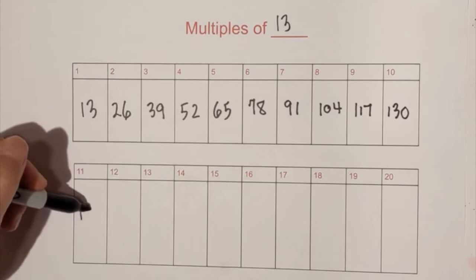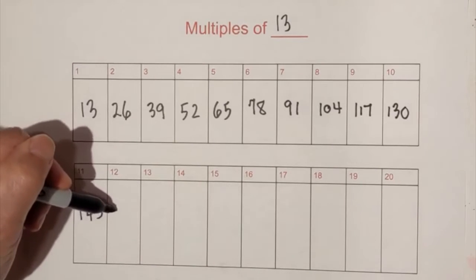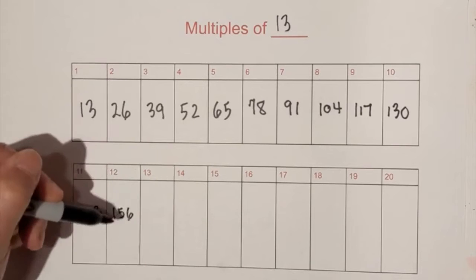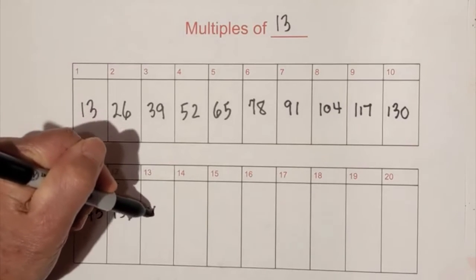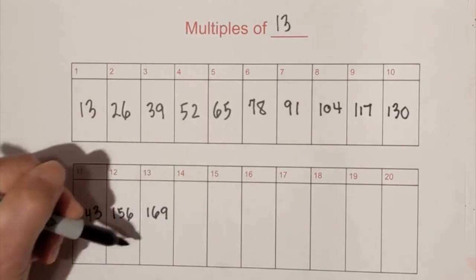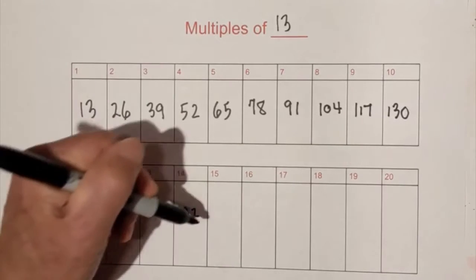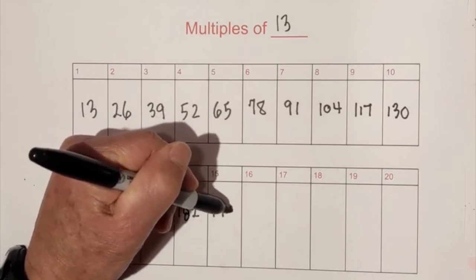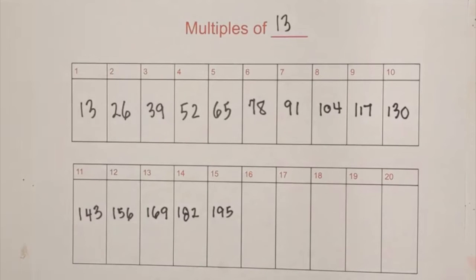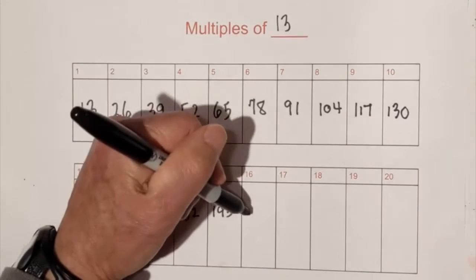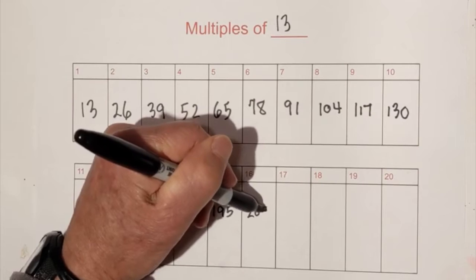Now let's go down to 11. We have 143, 156, 169, 182, 195. And now 16 times 13 is 208.